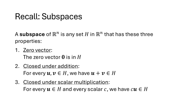First, let's recall the definition of subspace from Lecture 27. A subspace of R^n is any set of vectors in R^n that has these three properties: it has to contain the zero vector, it must be closed under addition, and it has to be closed under scalar multiplication.